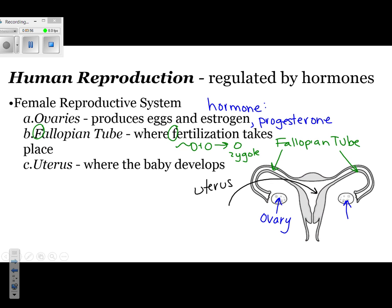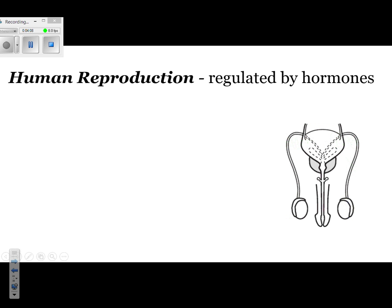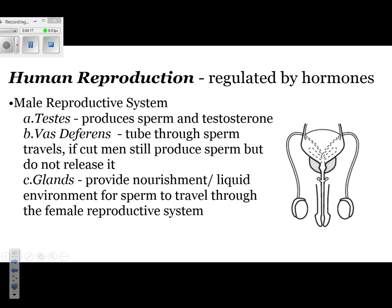Those are the three parts of the female reproductive system you must know. For the male reproductive system, there are also three parts to know, and it is also dictated by hormones — specifically testosterone. The first organ is the testes. The testes produce sperm and testosterone. Testosterone is the male hormone, and sperm is the male gamete.